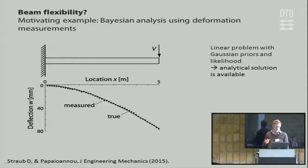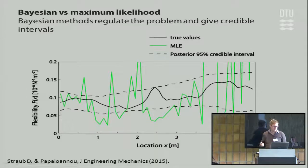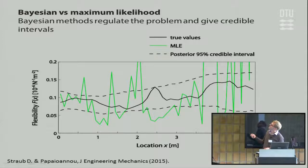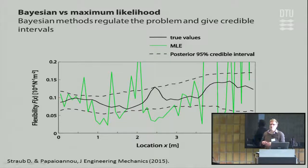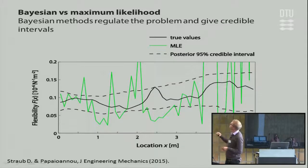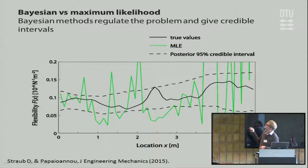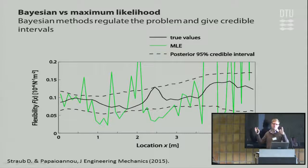We can back-calculate to get an estimate of the flexibility — one over the modulus of elasticity. The true value is a random field. A maximum likelihood estimate with 50 parameters completely overfits the data. Using a Bayesian approach regulates the problem through the use of the prior. The Bayesian estimate is expressed as a credible interval — not one value but a distribution — telling us that within 95% probability the true solution lies within a 95% credible interval.